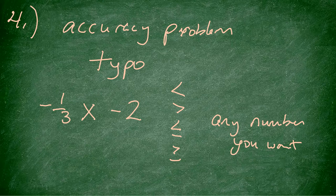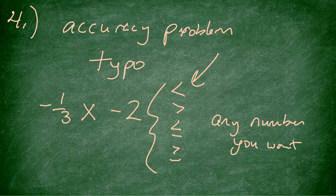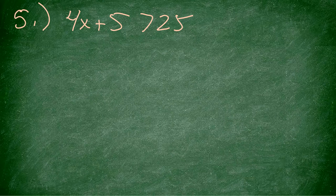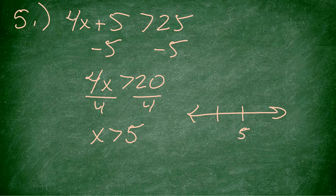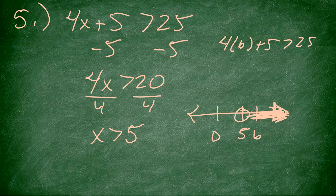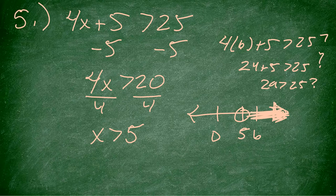Number 4 is one of the accuracy problems because it's a typo — I forgot the inequality sign, so you add one of the four symbols and whatever number you want. Number 5: we have 4x plus 5 is greater than 25. I subtract 5 from both sides to get 4x is greater than 20, then divide by 4 to get x is greater than 5. Open circle, shade to the right. I check 6: 4 times 6 plus 5 is 29, which is greater than 25. Good.